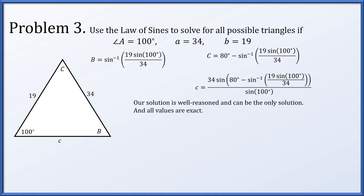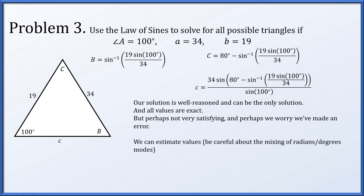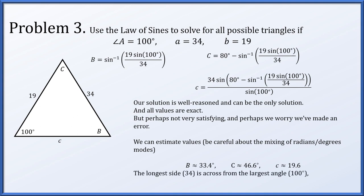All these values are completely exact with no rounding error. But we can estimate: angle B is about 33.4°, angle C is 46.6°, and side length c is about 19.6. The longest side is 34, across from the largest angle of 100°. The smallest side is 19, across from the smallest angle of 33.4°. This is always a way to check: largest side across from largest angle, smallest side across from smallest angle. If that doesn't work out, you definitely made a mistake.